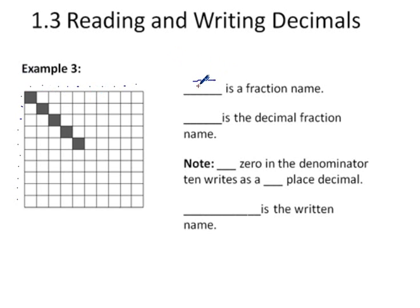That means any fractions we get out of it are going to be out of a hundred. How many shaded squares? 1, 2, 3, 4, 5. Five hundredths is our fraction.